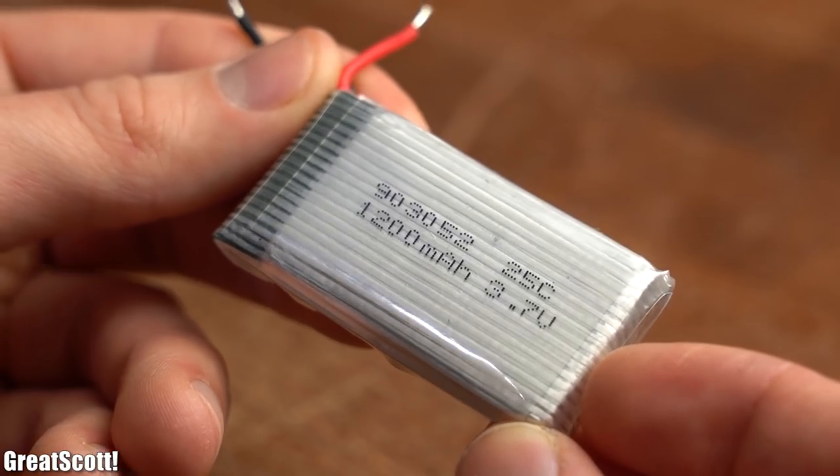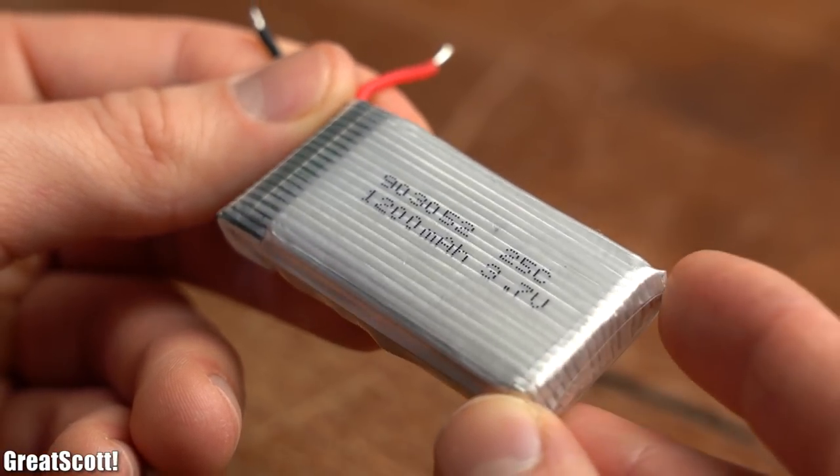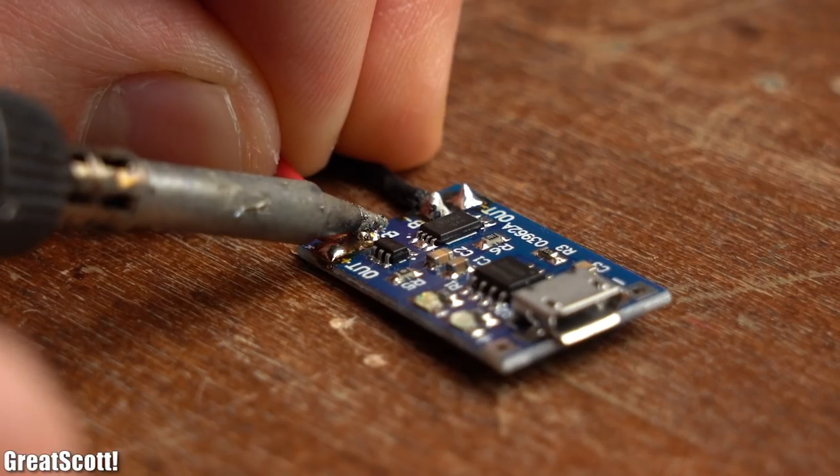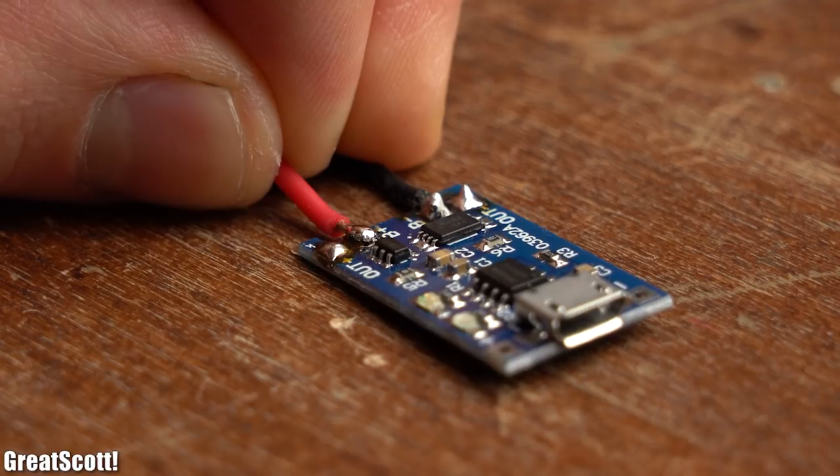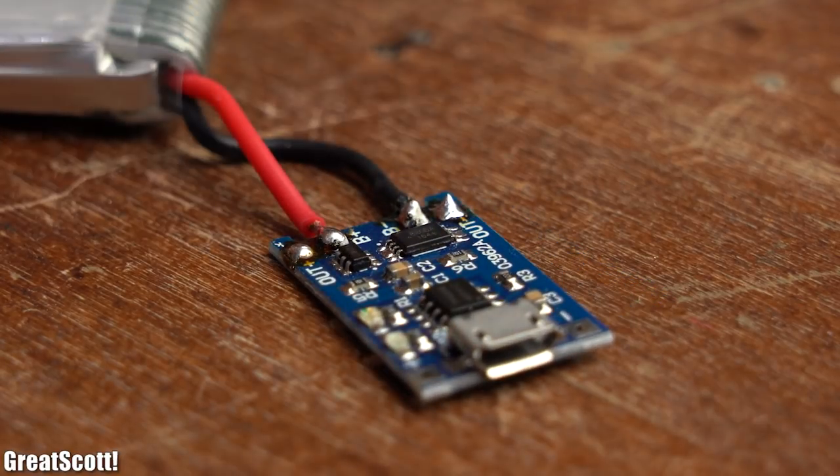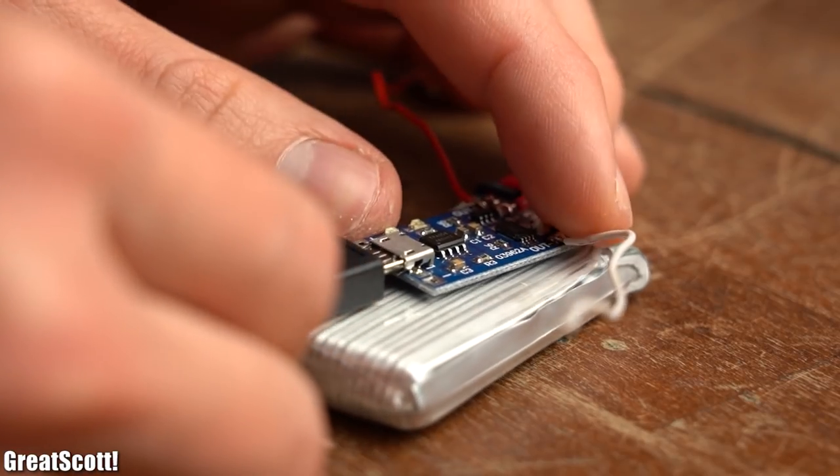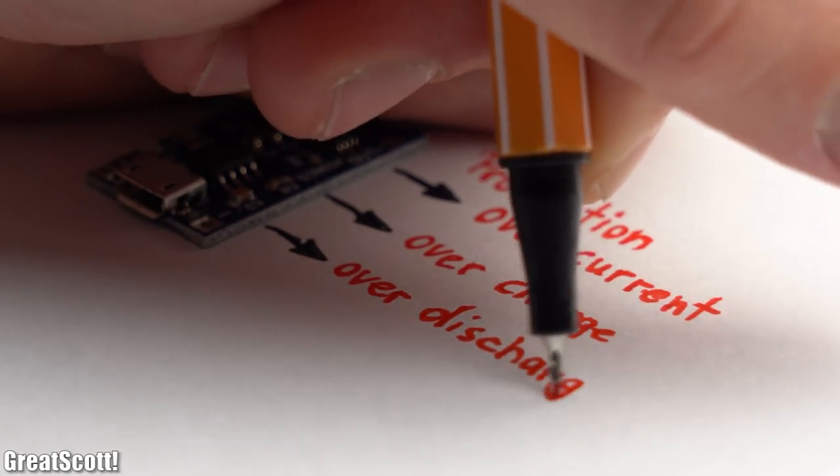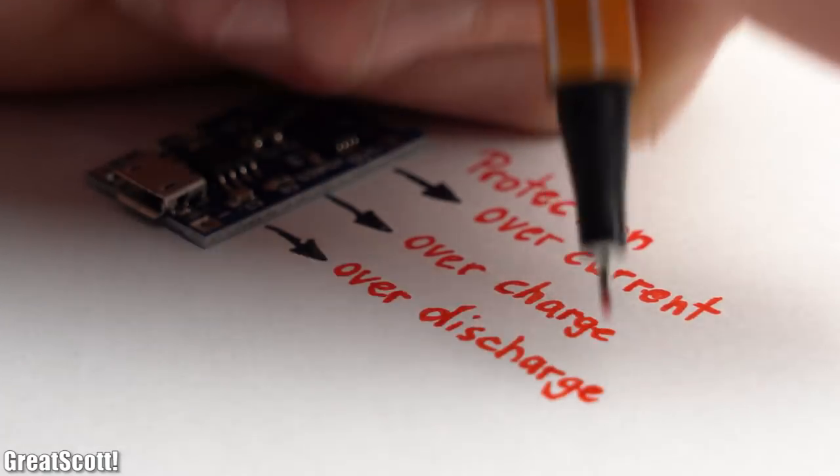For the power I went with this rather small 1200 mAh LiPo battery, which I soldered to this TP4056 charge and protect board. This board, like the name implies, cannot only charge up the LiPo battery but also protects it from over current, over charge, and over discharge.